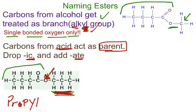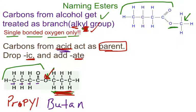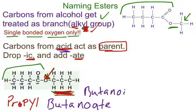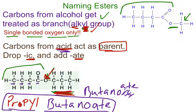Now I have to name the rest of it as the parent. I count one, two, three, four carbons here. Originally this was an acid — butanoic acid, a four-carbon acid. I write down B-U-T-A-N, and I'm not going to write -OIC because we drop the -IC and add -ATE. So butanoic becomes butanoate. That's how we get butanoate. So propyl butanoate is our answer for that molecule — and you're done.